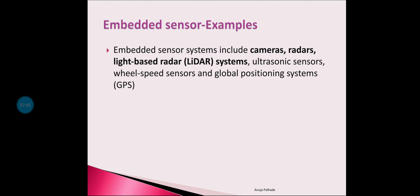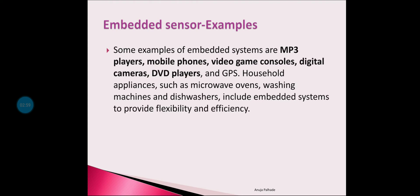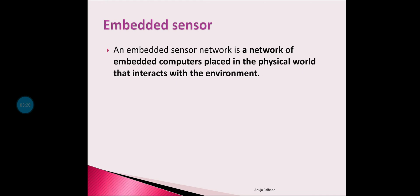Examples of embedded sensor systems include cameras, radars, light-based radars, ultrasonic sensors, wheel speed sensors, and GPS. Some examples of embedded systems are MP3 players, mobile phones, video game consoles, digital cameras, and DVD players. Household appliances like microwave ovens, washing machines, and dishwashers also include embedded systems to give flexibility and efficiency to the user.